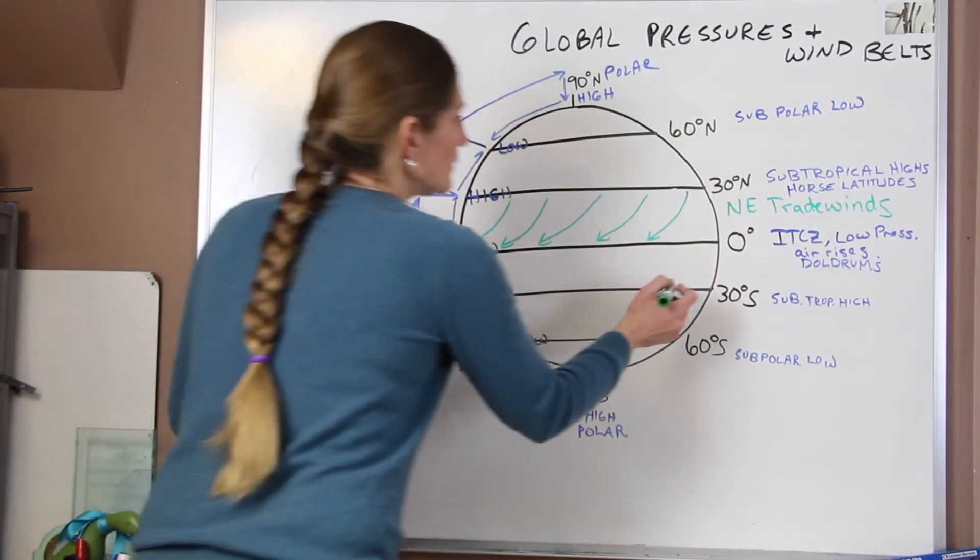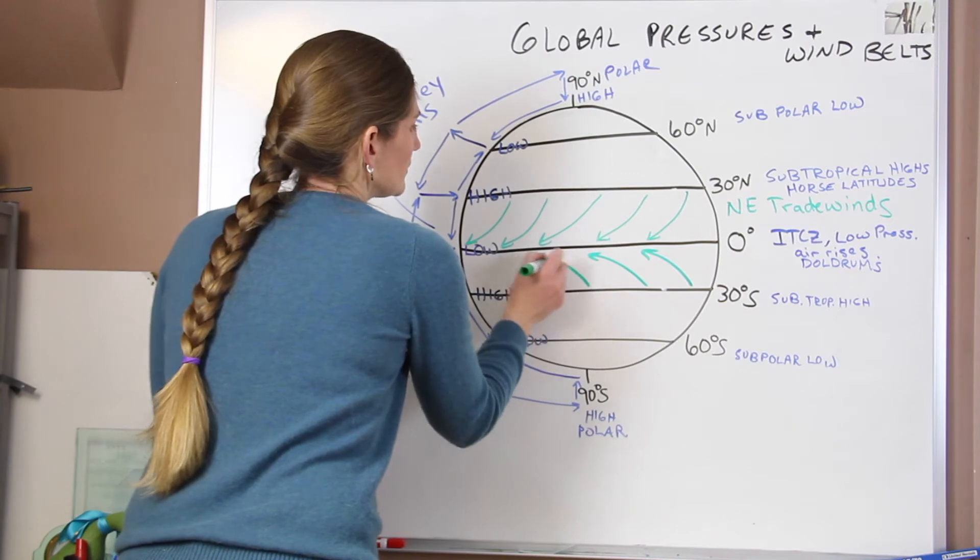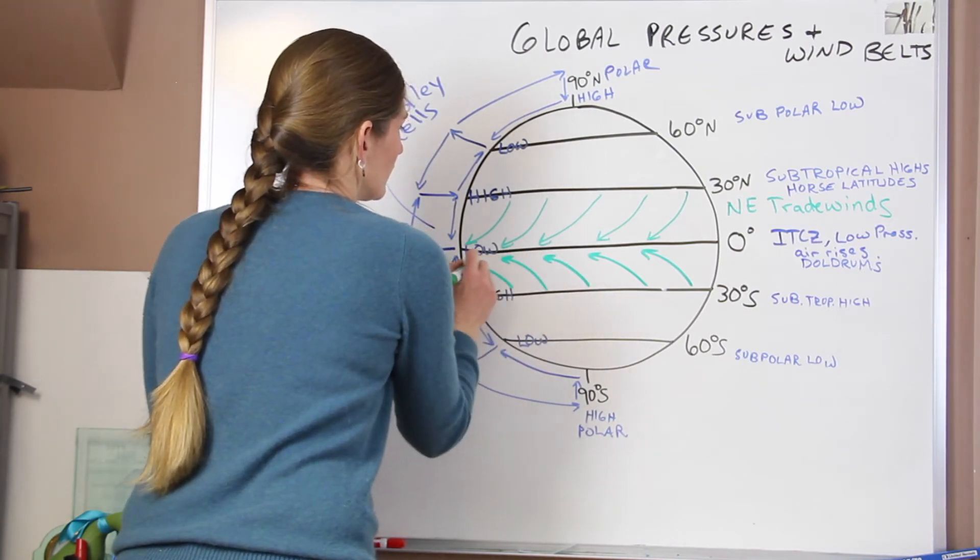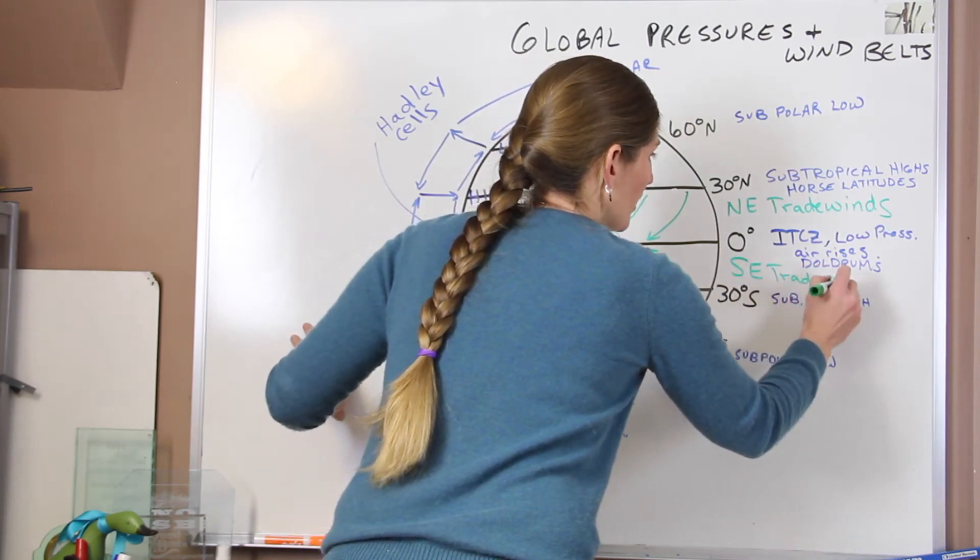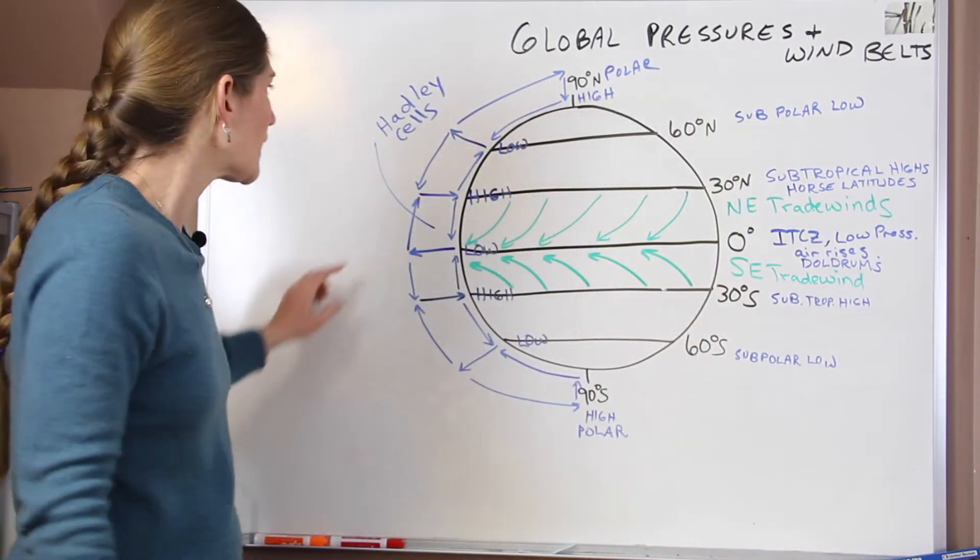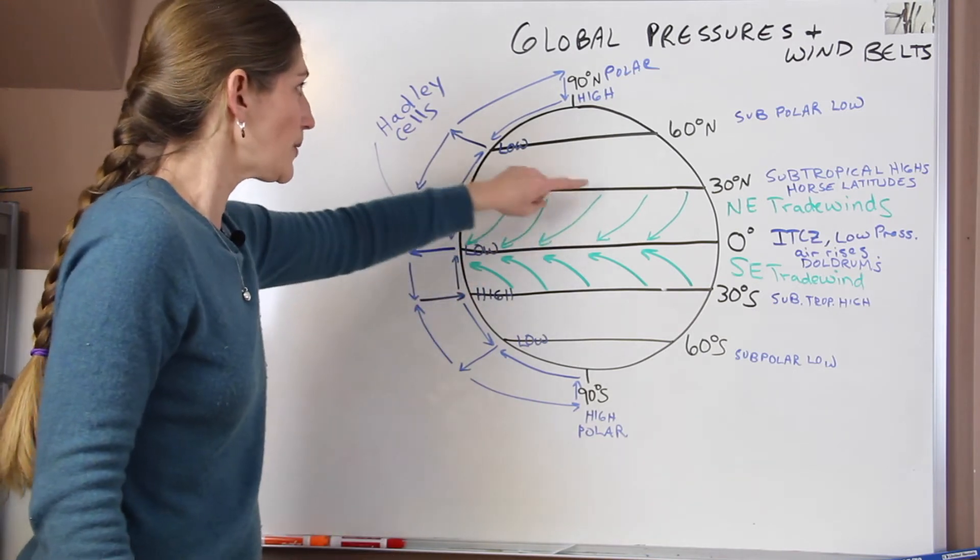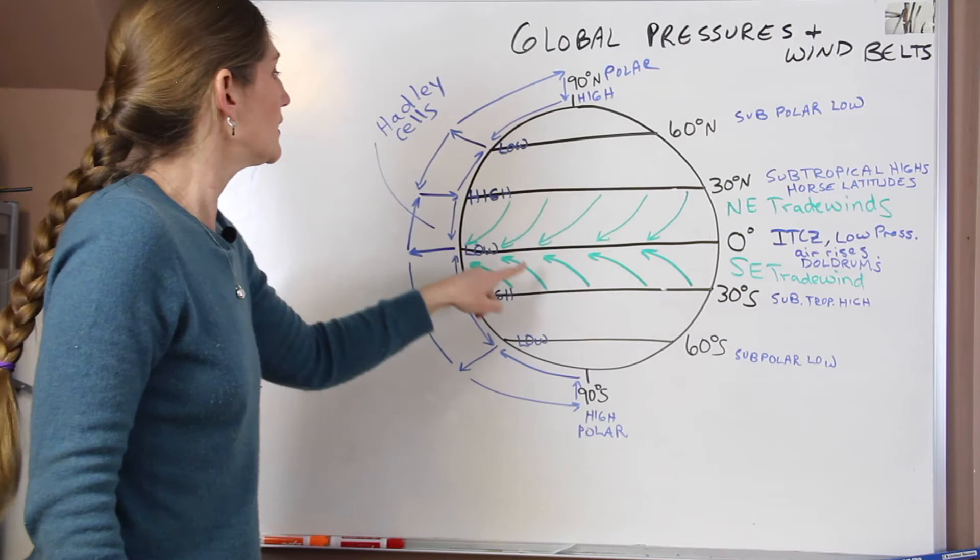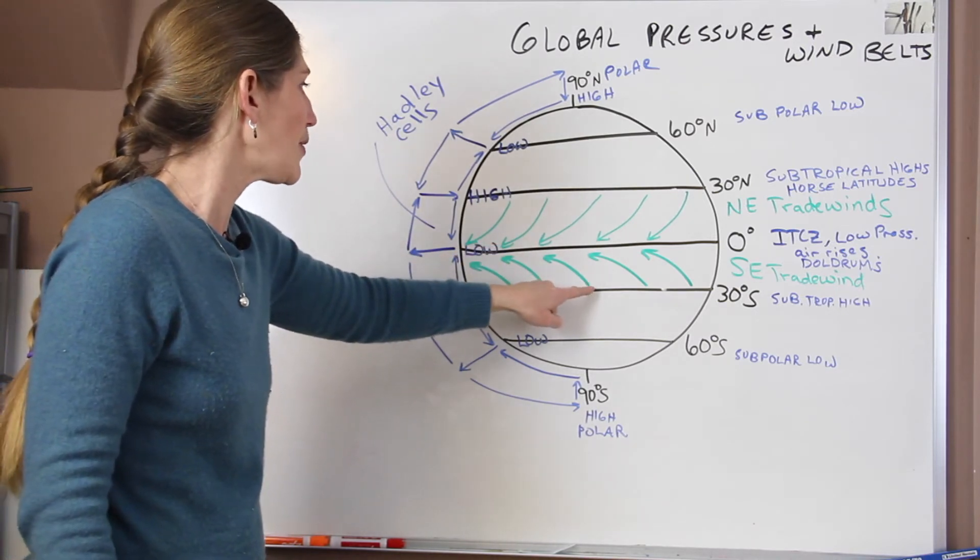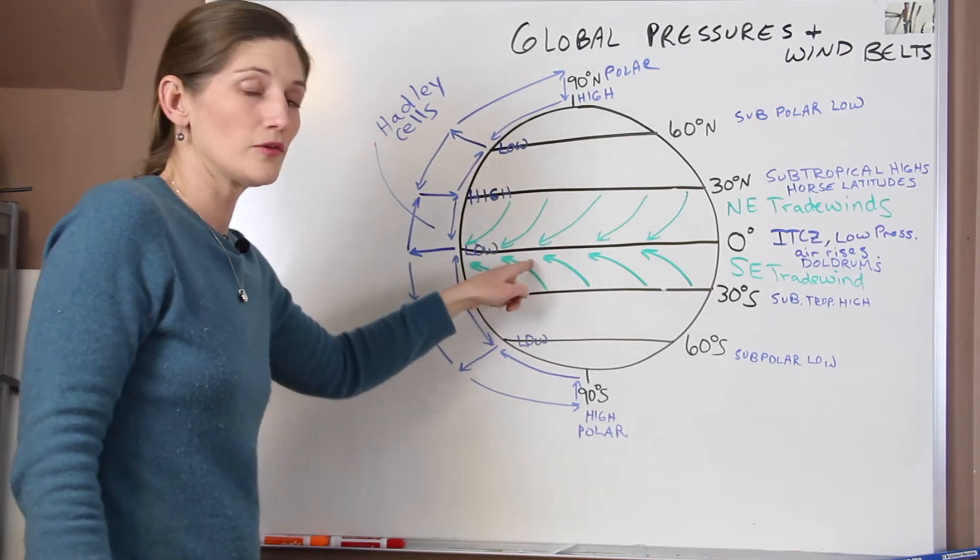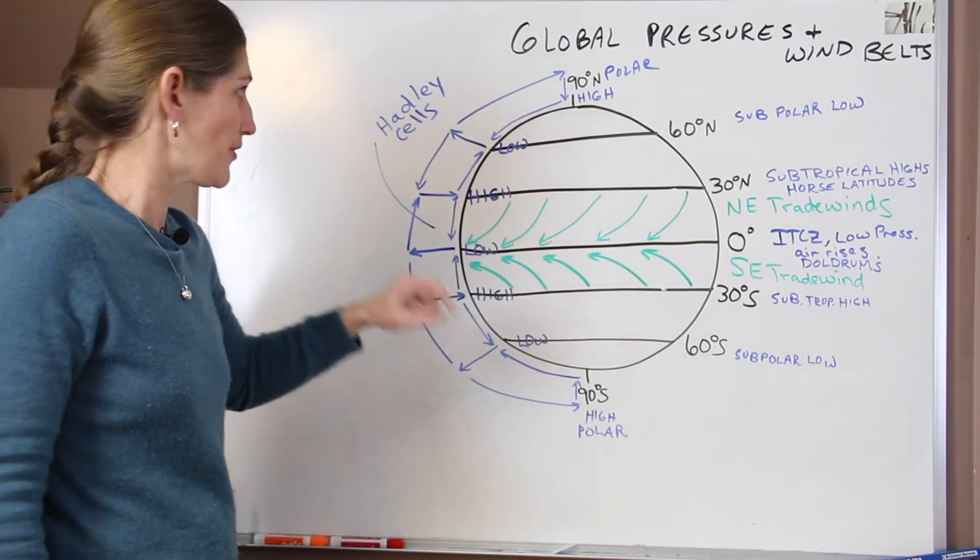In the southern hemisphere, they come in, but this time they're deflected to the left. These are the southeast trade winds. And you might be wondering, where did those names come from? Winds are named based on the direction from which they are flowing. So these trade winds are flowing from the northeast down to the southwest. Down here in the southern hemisphere, they're flowing from the southeast up to the northwest. So they're called the southeast trade winds and the northeast trade winds. They're named for where they're coming from.